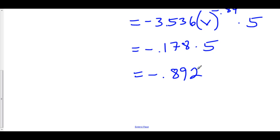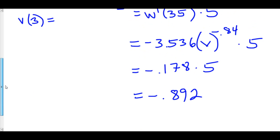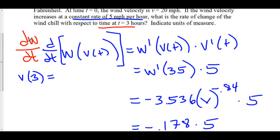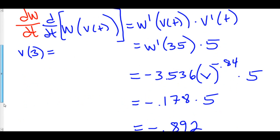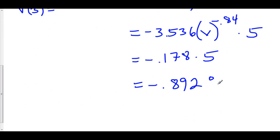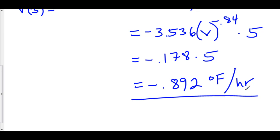Now let's talk about units. We're finding dW/dt. W is in terms of degrees Fahrenheit, and t is in terms of hours. So we have degrees Fahrenheit divided by hours, meaning our unit is degrees Fahrenheit per hour. So our answer is negative 0.892 degrees Fahrenheit per hour.